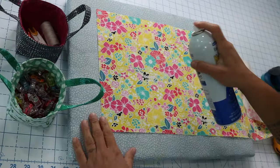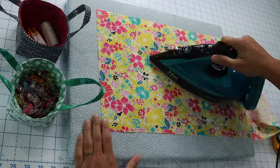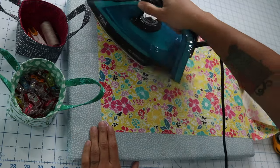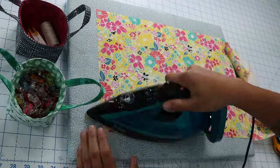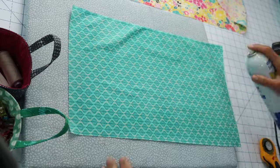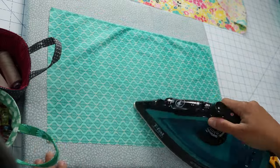Now let's prep the fabric we're going to use on the outside of the basket by spray starching and setting it with the heat of a hot dry iron. Then I'll repeat the steps to starch and press my lining fabric as well.